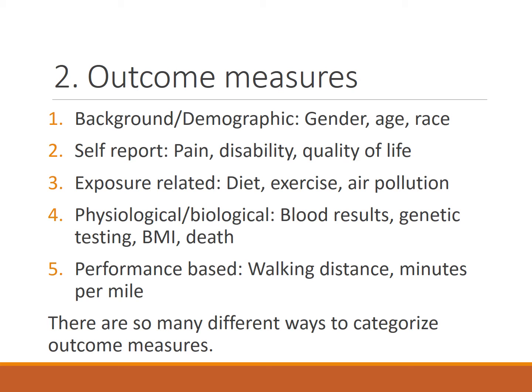The second factor we should look at are outcome measures. When reading a study, we have to think about what they are actually measuring. Most studies will look at demographic outcomes such as gender, age, and race. But there are lots of other factors that can be measured, such as self-reported outcomes — anything from a survey the patient fills out with their opinion about how much pain they have, disability, quality of life, or other factors like that.